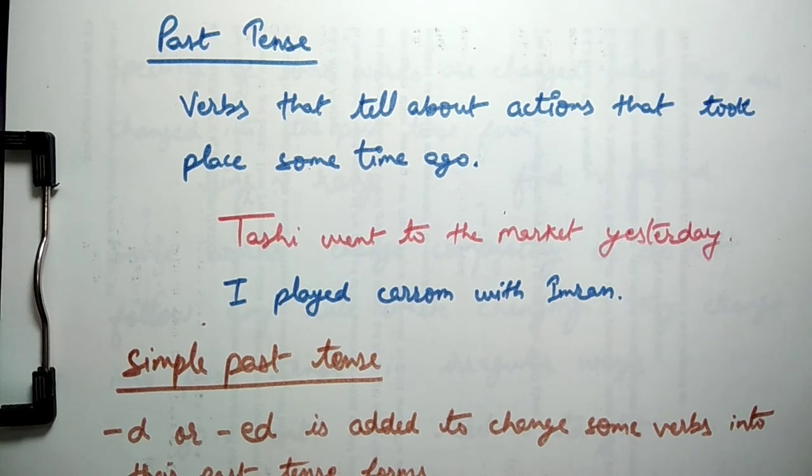So let's start this video on past tense. Verbs that tell us about actions that took place some time ago are in past tense. Example: Tashi went to the market yesterday. Yesterday is the time which is over, so here past tense has been used. Another example is I played carom with Imran.